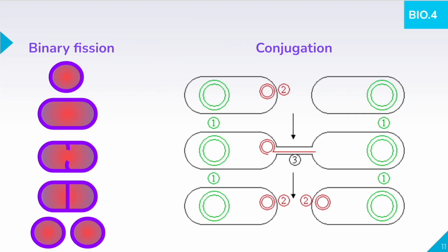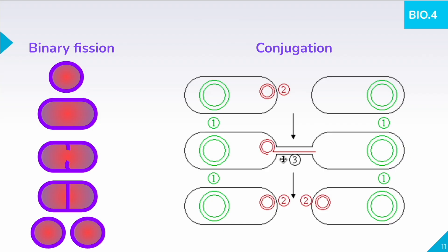Bacteria can reproduce on their own — they are living things. Some bacteria reproduce through binary fission, which is a little bit like mitosis, where it copies its contents and then divides into two identical daughter cells. In conjugation, which is more rare, a bacterial cell has a special structure that will inject a portion of its DNA — a plasmid or circular piece of DNA — and send it to another bacterial cell. This can transfer an advantageous trait like antibiotic resistance, and the new bacteria can incorporate that into its own genome and express those traits. Conjugation is a type of sexual reproduction in bacteria, while binary fission is asexual reproduction.